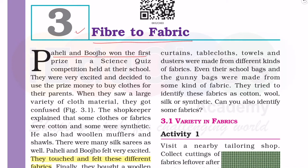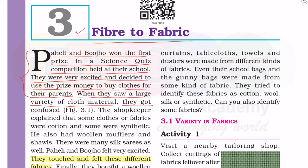Paheli and Bujo won the first prize in a science quiz competition held at the school. They were very excited and decided to use the prize money to buy clothes for their parents. When they saw a large variety of clothes material, they got confused. The shopkeeper explained that some clothes or fabrics were cotton and some were synthetic.